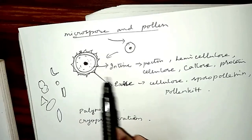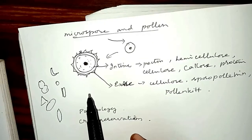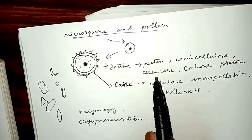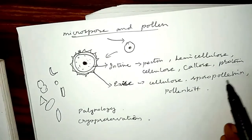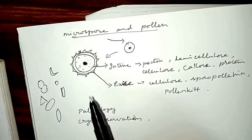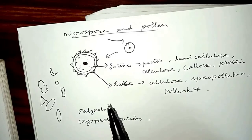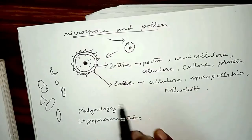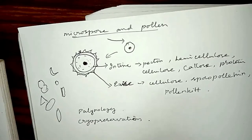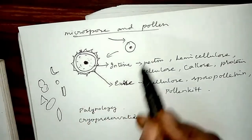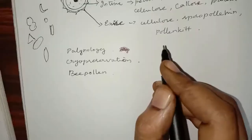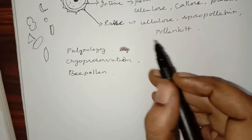Sporopollenin is very important — it is contributed both by the pollen cytoplasm and the tapetum and is derived from carotenoids. It gives resistance to pollen against physical and biological decomposition, withstanding high temperatures and strong acid, alkali, and enzyme action. It also preserves pollen in fossil deposits and protects the pollen during its journey from the anther to the stigma during pollination. Pollen kit is another substance on the surface of the pollen grain, also derived from the tapetum, yellow or orange in color, made up of carotenoids and flavonoids — an oily layer that protects pollen from UV radiation and attracts insects.